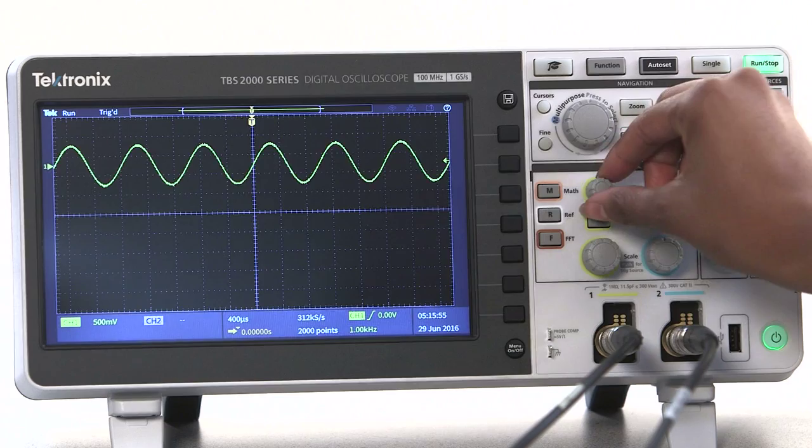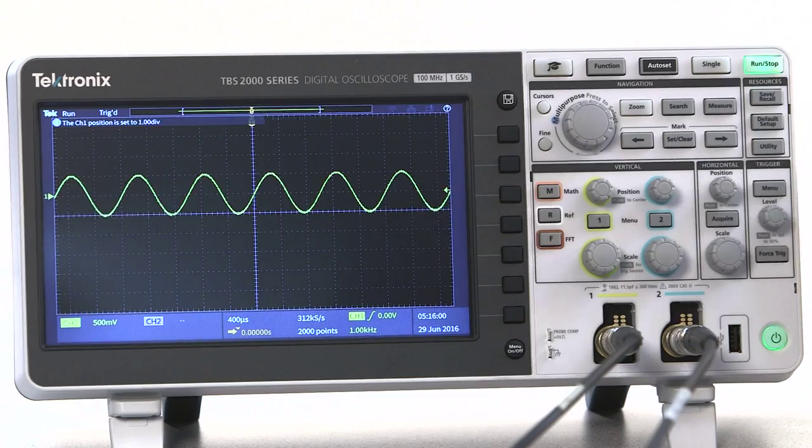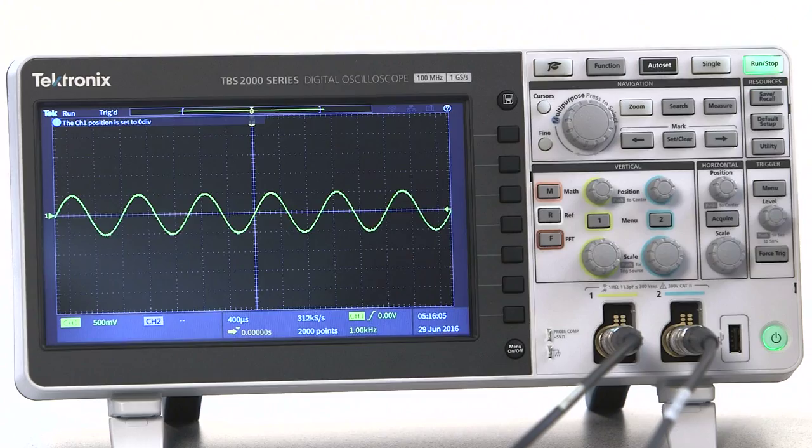The vertical position control moves the waveform up and down. Pushing the knob brings the baseline back to center. The channel menu buttons turn the channel on and off, and also open up the channel menu.